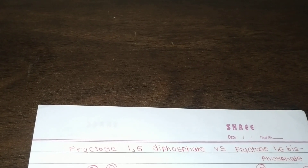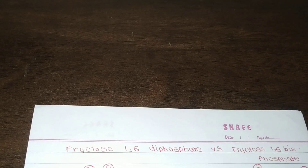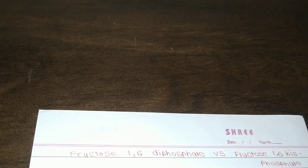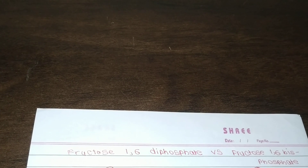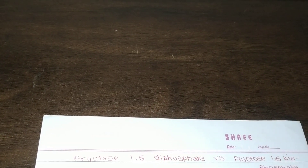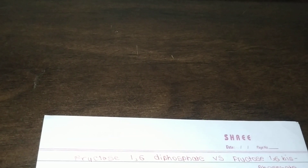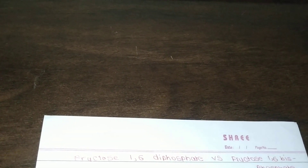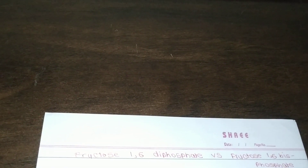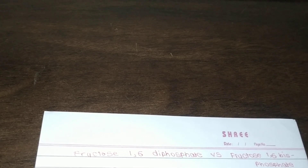Today we will learn what is the difference between fructose 1,6-diphosphate and fructose 1,6-bisphosphate. In the glycolytic pathway, some people often use the term fructose 1,6-diphosphate, which is incorrect. Actually, that is fructose 1,6-bisphosphate. So what is the difference between fructose 1,6-diphosphate and fructose 1,6-bisphosphate?